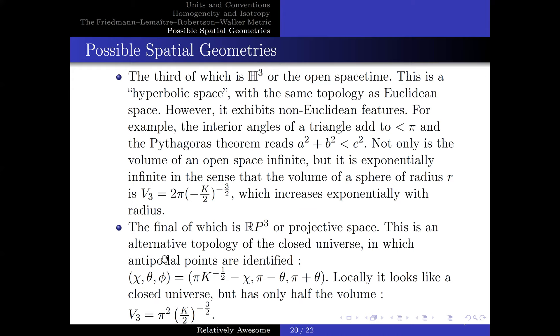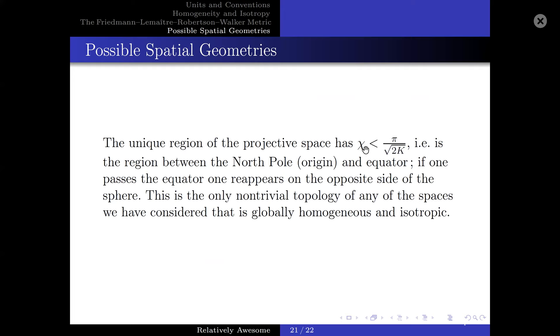The final geometry, which we did not mention in the previous slide, is projective space. This is an alternative topology of the closed universe, in which the antipodal points are identified in the following manner. Locally, it looks like a closed universe, but has half the volume. The unique region of the projective space has χ less than π over square root of 2K. For example, in the region between the North Pole and the equator, if one passes the equator, one reappears on the opposite side of the sphere. This is the only non-trivial topology of any of the spaces we have considered that is globally homogeneous and isotropic.